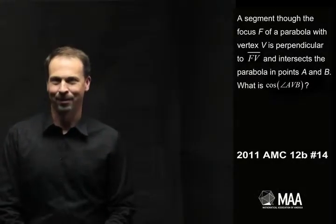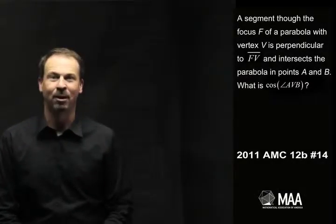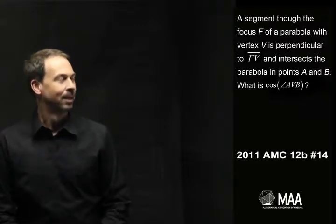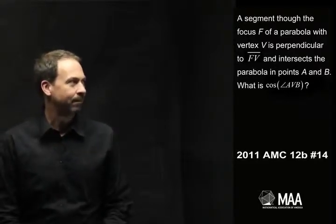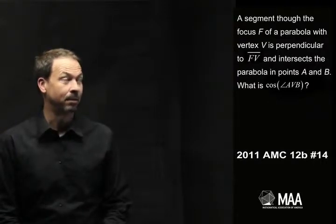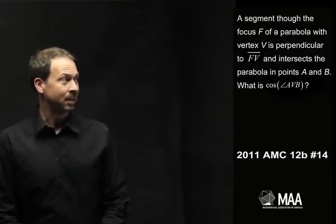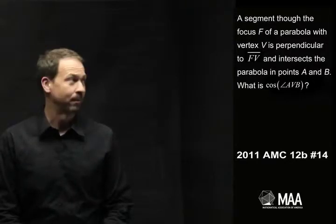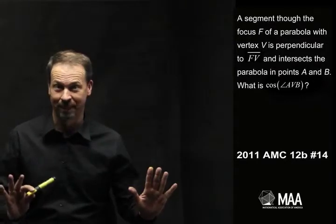G'day! Welcome to another Curriculum Burst. This is an interesting question from the grade 12 exam. It goes as follows: A segment through the focus F of a parabola with vertex V is perpendicular to FV and intersects the parabola in points A and B. What's the cosine of angle AVB? Oh gosh, that was a lot to take in.